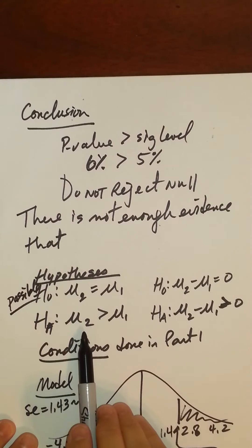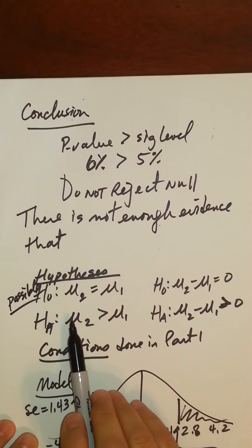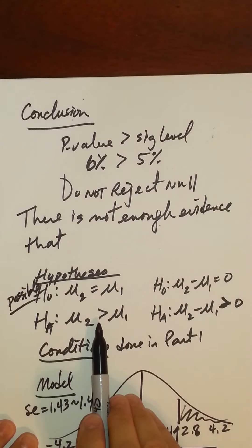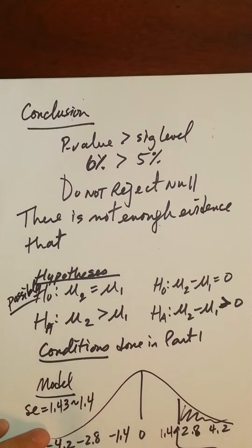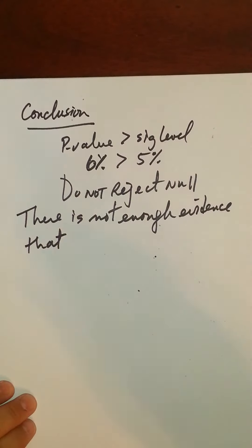And what does the alternative say? That the average time it takes to drive using Route 2 is longer or greater than the average time that it takes to go Route 1.